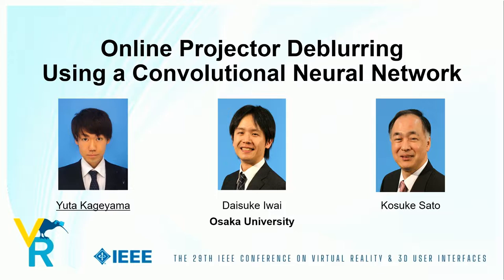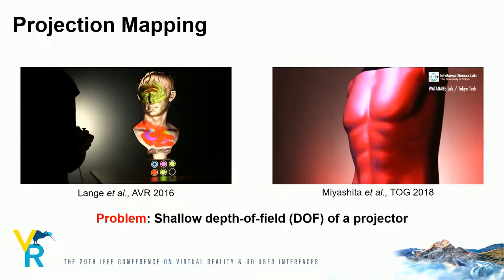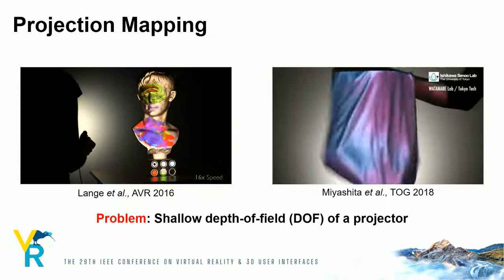We will present an online projector de-blurring technique using a convolutional neural network. In projection mapping, computer-generated images are overlaid onto non-planar and dynamic objects. In this case, the shallow depth of field of the projector is a problem, because the projected image will be degraded by the defocus blur.